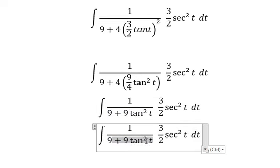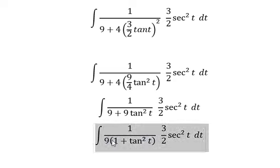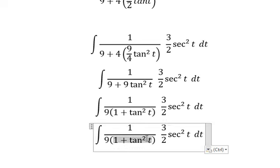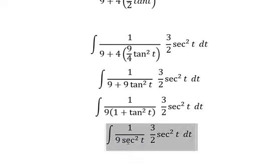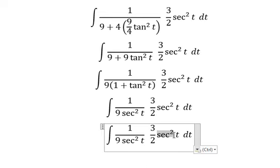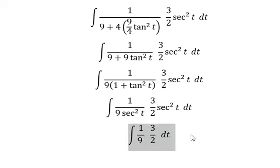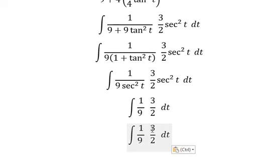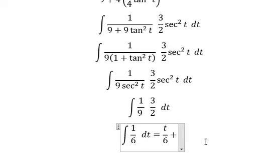We can do factorization here, and now this part is sec²t. We can simplify sec²t over this expression, and we simplify again: three and nine reduce, giving us one over six. So we have t over six plus C.